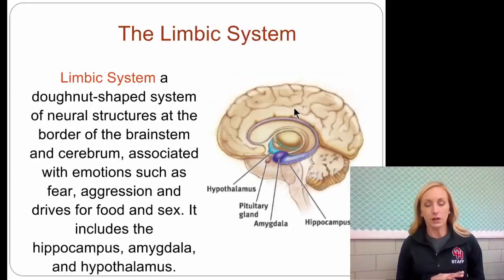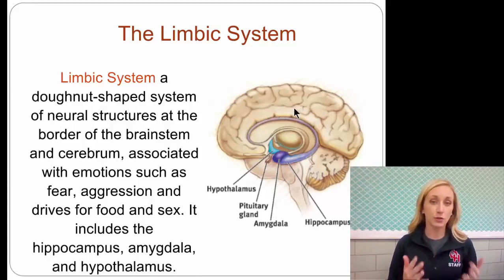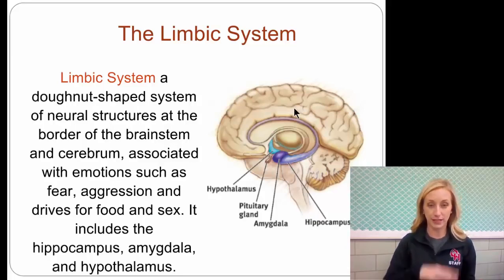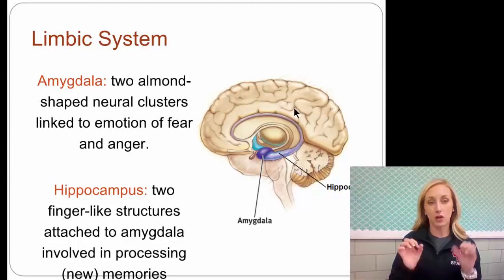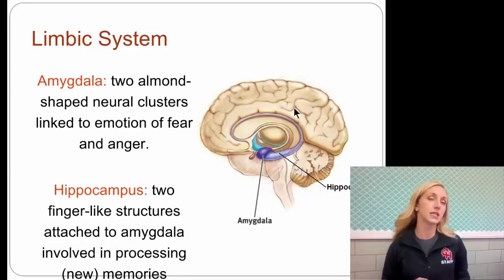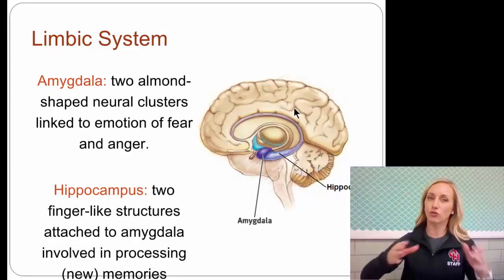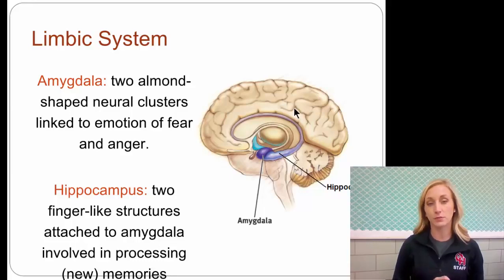The limbic system is comprised of parts — some we've already talked about, including the hypothalamus and pituitary gland — but also the amygdala and hippocampus, which we have not talked about yet. It's a donut-shaped system of neural structures at the border of the brain stem and cerebrum, associated with various functions. The amygdala are little almond-shaped neural clusters linked to the emotions of fear, anger, and aggression — extreme emotions, not just feeling lovely on a nice day. Extreme fear and extreme aggression. The hippocampus consists of two finger-like structures attached to the amygdala, and these are involved in processing new memories — anything new is processed through your hippocampus.